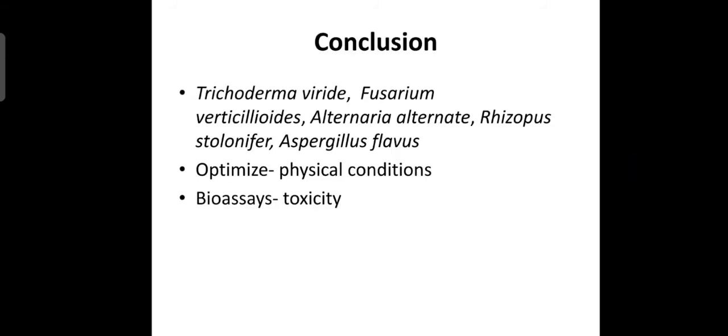These are the images of the microscopic and morphological analysis what we did with the obtained cultures. Followed by that, in the molecular characterization, we have identified it using Sanger sequencing method. This is the image showing the formation of the silver nanoparticles. Whichever organisms were capable of producing the silver nanoparticles will turn into brown color.